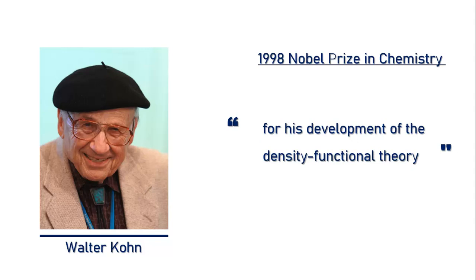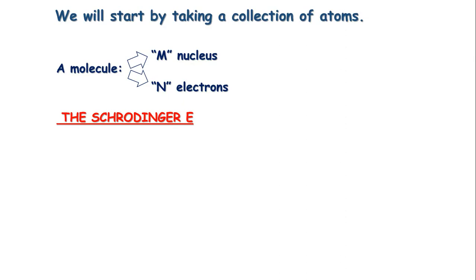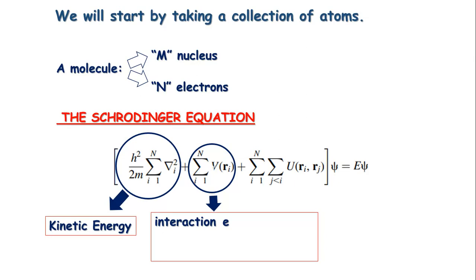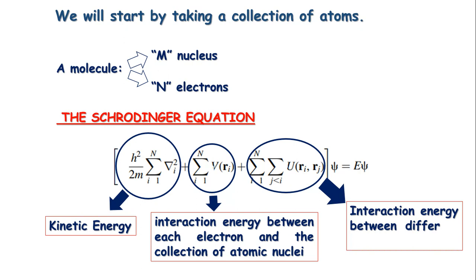We will start by taking a collection of atoms, because whatever you do in DFT is nothing but a collection of atoms. At the simplest, let's say a molecule with m number of nuclei and n number of electrons. It's reasonable to take a look at the Schrödinger equation to see how messy the situation is. From the very basics of quantum mechanics, this is your kinetic energy term, this part is the interaction energy between each electron and the collection of atomic nuclei — the attraction part — and this is the interaction energy between different electrons, the repulsive part. Adding these three you get the total energy. Let's call this equation number one.